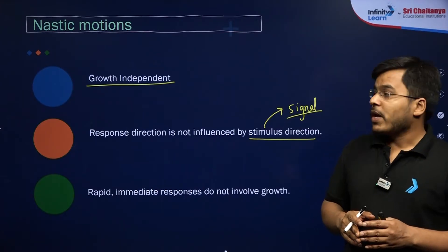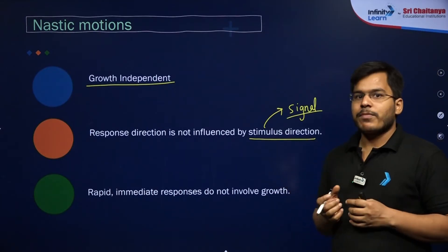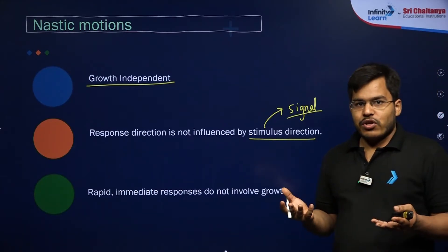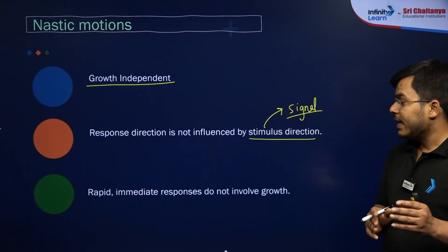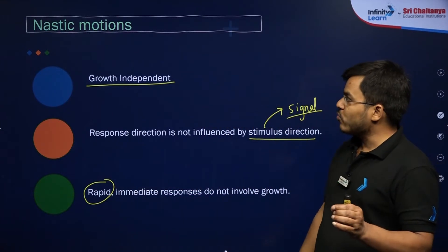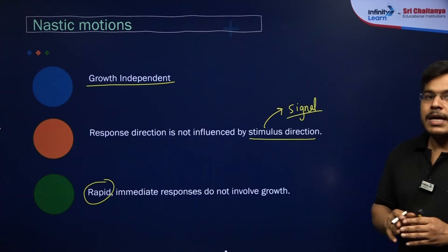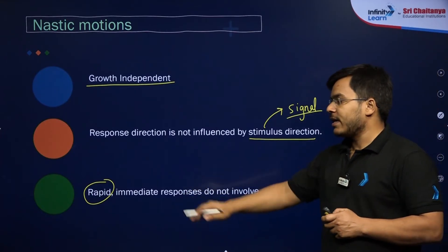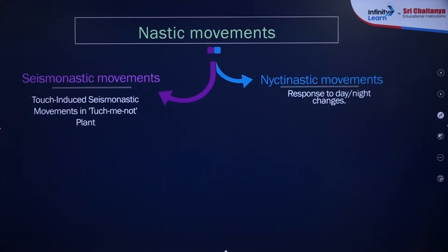When nastic movements occur, the plant receives certain signals from the outside surroundings. Whatever the direction of those signals, it will not affect the direction of the nastic movement. These movements are also going to be very rapid or fast. So to summarize: nastic movements are growth independent, not influenced by the direction of the stimulus, and they are rapid and fast movements.